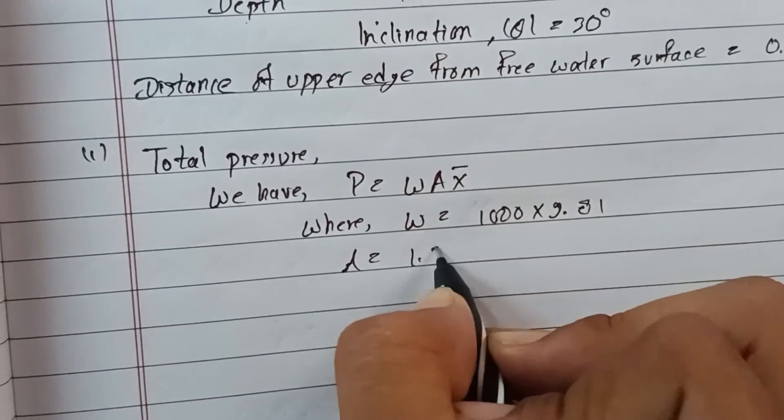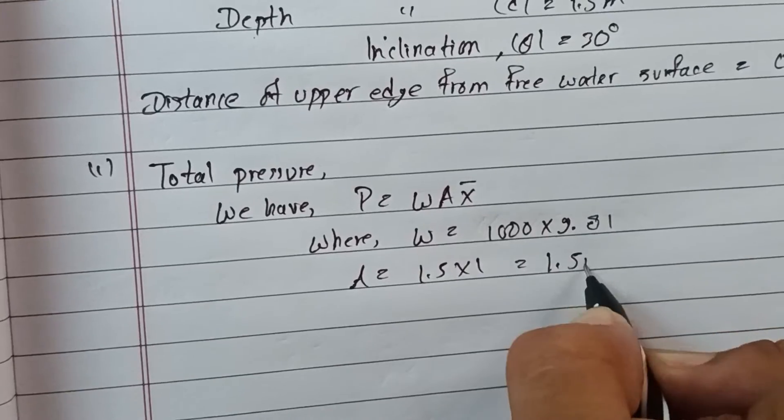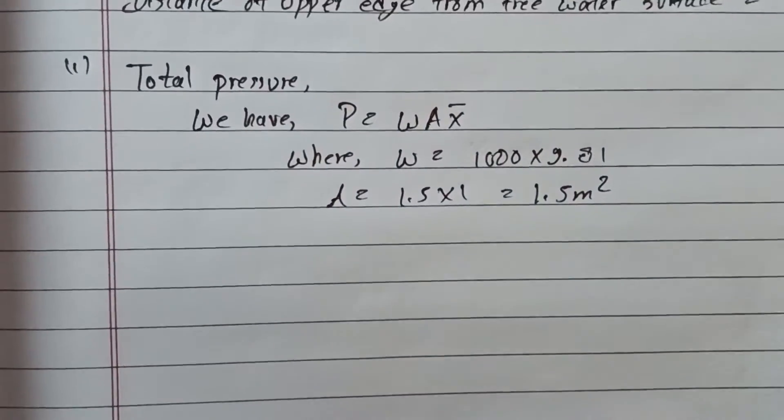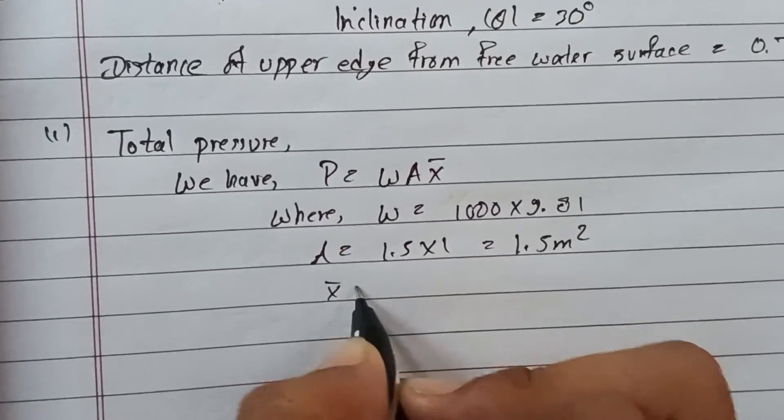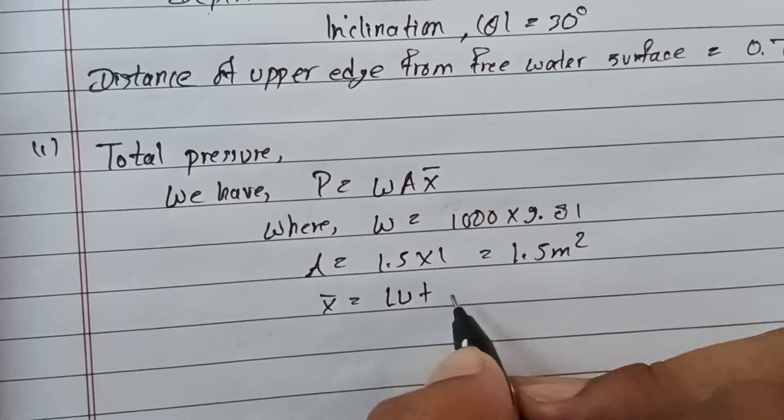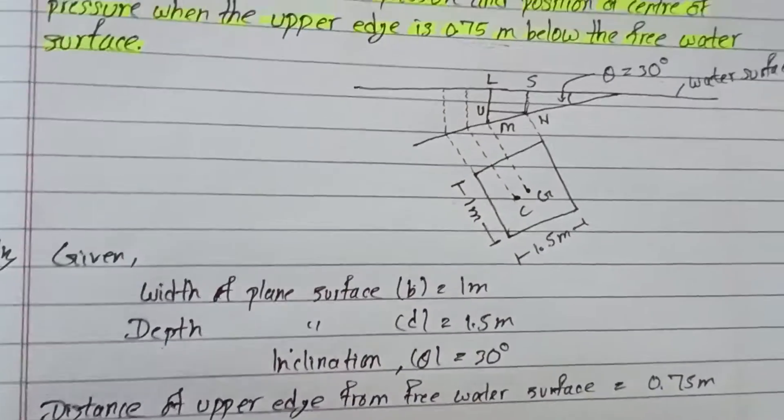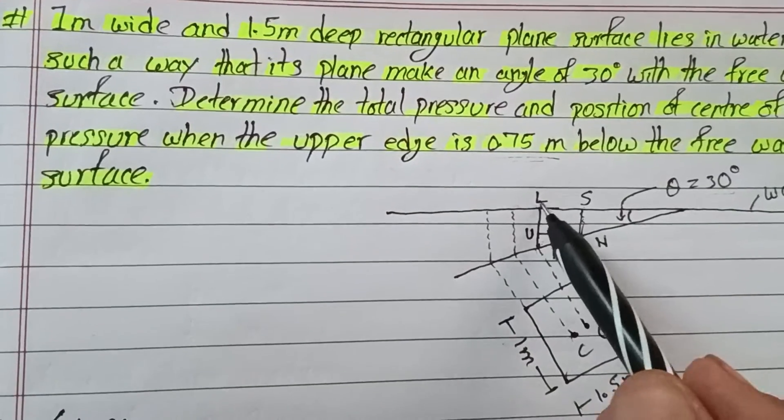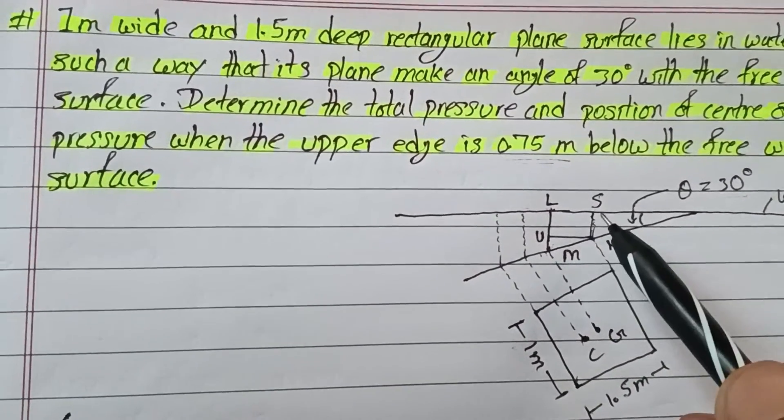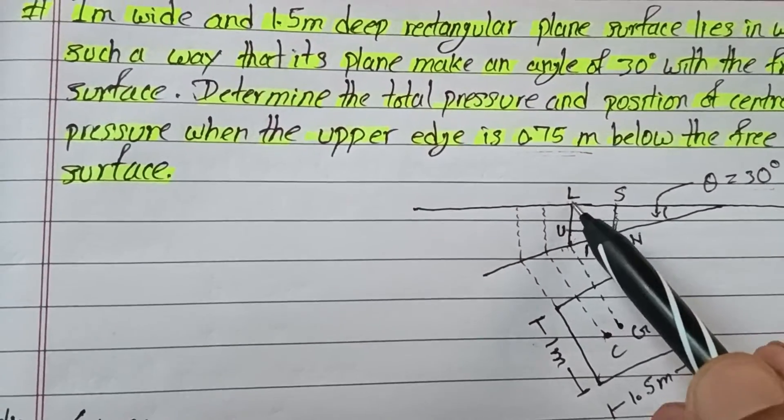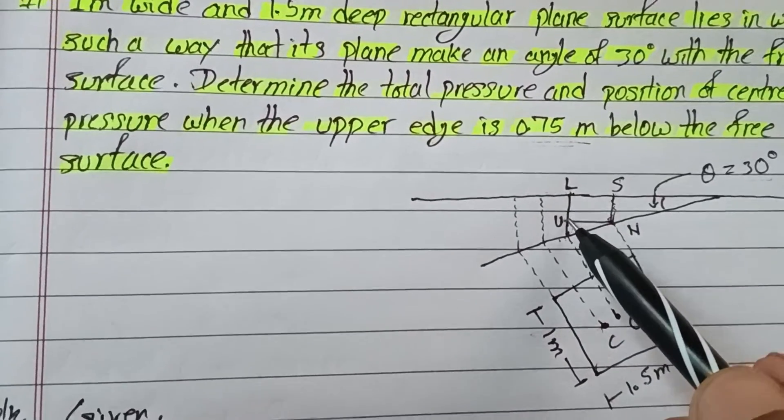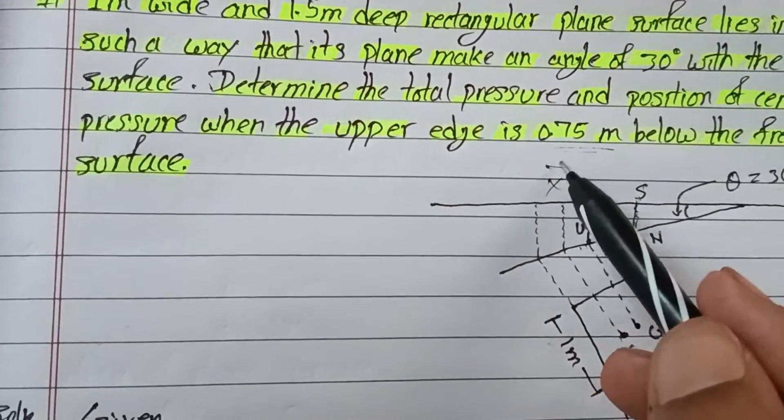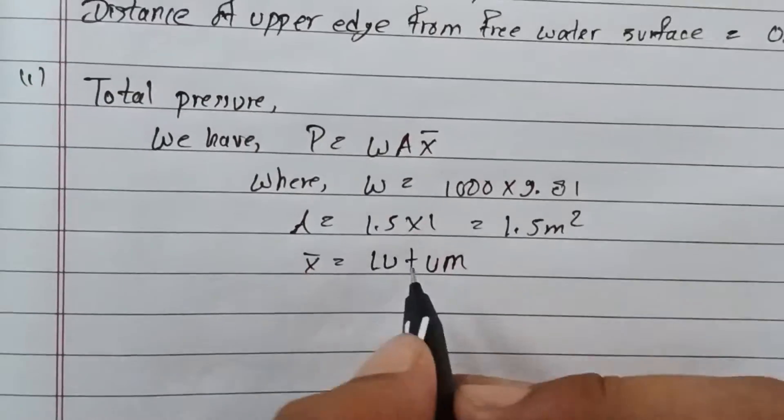Area A equals 1.5 times 1 equals 1.5 meter squared. That's width times depth, so 1 meter times 1.5 meters gives 1.5 meter squared. Now x-bar equals l_u plus u_m. Looking at the figure, we need to find x-bar. l_u is the distance, so x-bar equals l_u plus u_m.